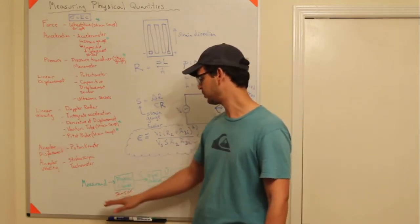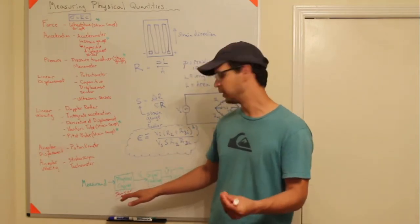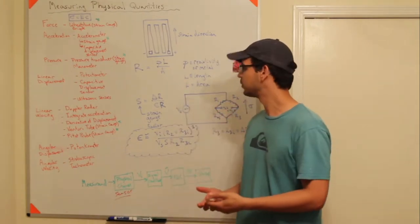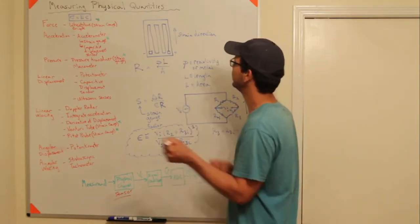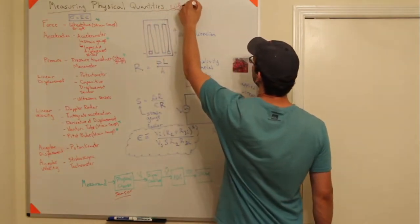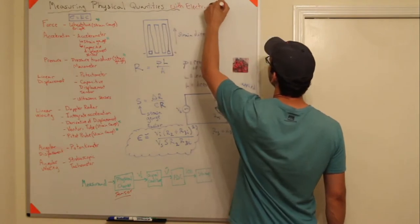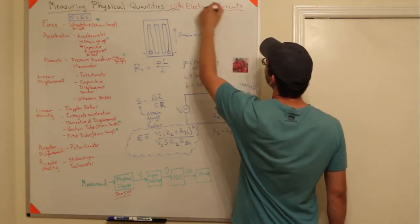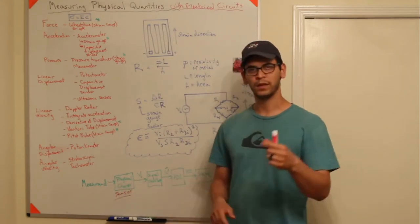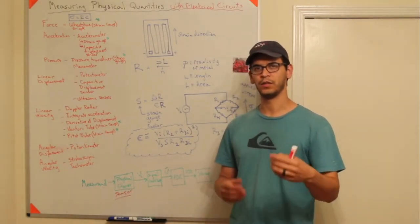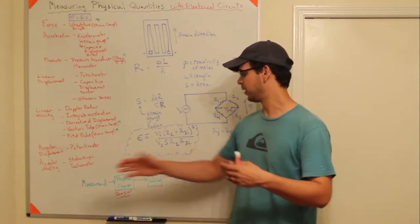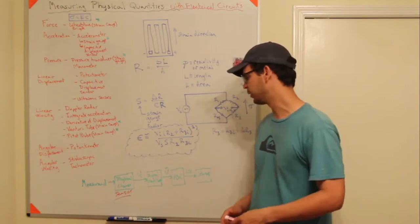You're measuring temperature, and the mercury expansion is the physical change you can view. Since we're doing instrumentation, we want to measure physical quantities with electrical circuits. What we want is when the measurand changes, some resistive property or voltage property changes in response.